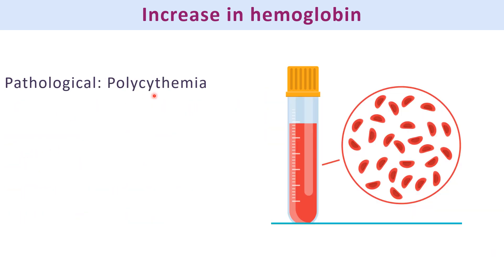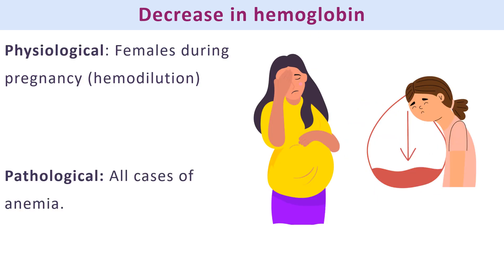Pathological increase in hemoglobin is seen in polycythemia, where RBCs are increased. Physiological decrease in hemoglobin is seen in pregnancy due to hemodilution. Pathological decrease in hemoglobin is seen in all cases of anemia. In pregnancy, remember it is a physiological cause of decreased hemoglobin due to hemodilution.